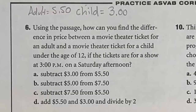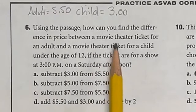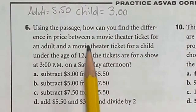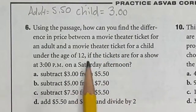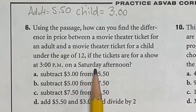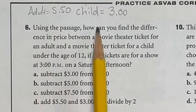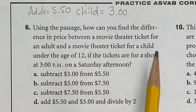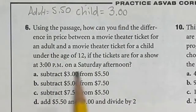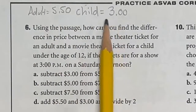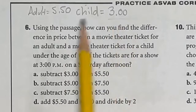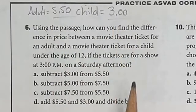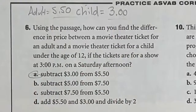Number 6 on the ASVAB is actually very easy. It asks how you would find the difference in price for an adult versus a child at 3 p.m. on Saturday. An adult was $5.50 and a child was $3. If we're looking at the options, to find the difference between those two, you would just subtract the child's price from the adult's price, which is answer A.